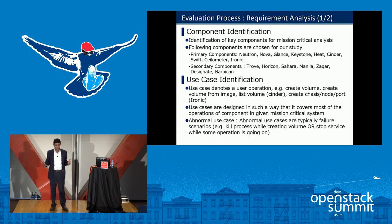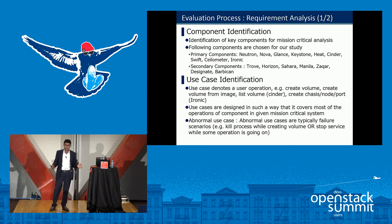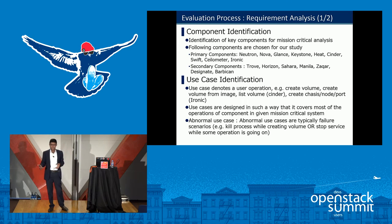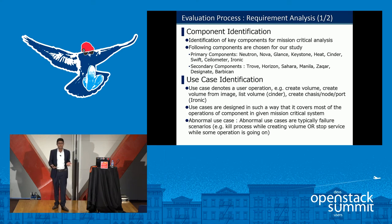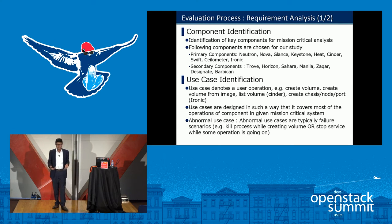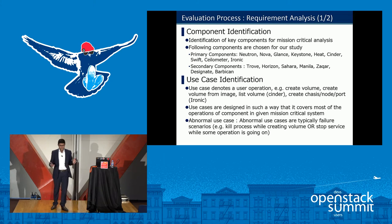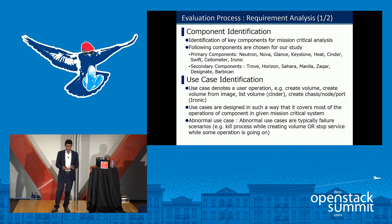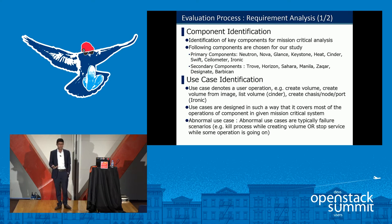After component identification, we created use cases. Typical examples for Cinder include: create volume, create volume from image, or list volume. For Ironic: create chassis, create node, or create port. The use cases are designed to cover most of the operations for the targeted system. We also define abnormal use cases — these cover non-normal system behavior, for example killing a process while creating a volume, or stopping a service while an operation is in progress. We run these use cases and analyze the logs and data.